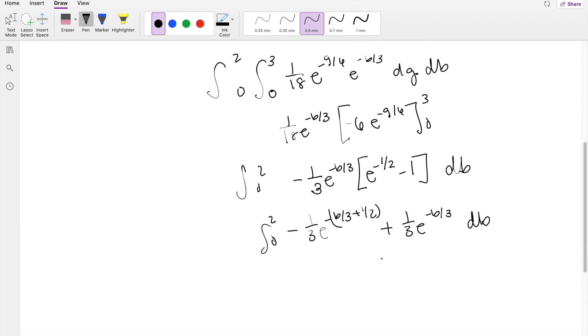So then taking the antiderivative, this one right here is just going to give you positive 1, e to the negative b over 3, plus 1 half. And right here is also going to give you negative 1, e to the negative b over 3, integrating this from 0 to 2.